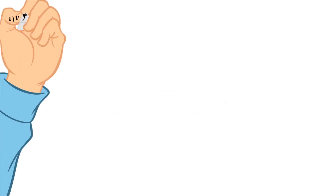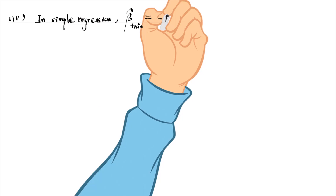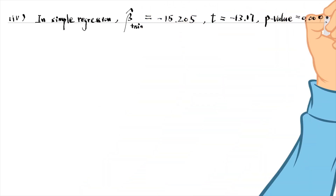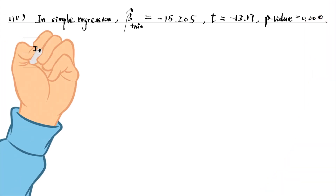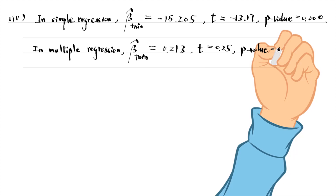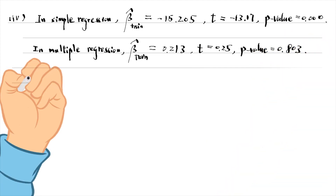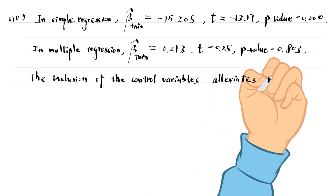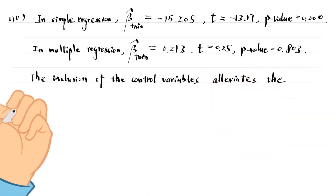We estimate the simple and multiple regressions using observational data in part 4. In the simple regression, the coefficient on the job training is negative because it suffers from omitted variable bias. After adding the control variables to the model, the job training effect becomes positive, but not statistically significant. The inclusion of the control variables alleviates the omitted variable bias.